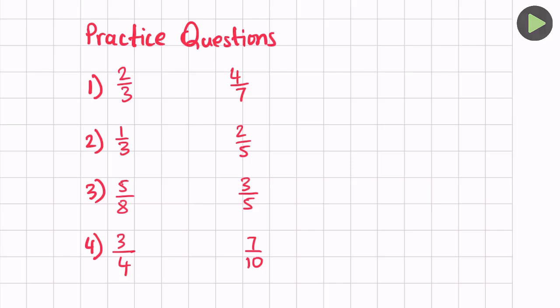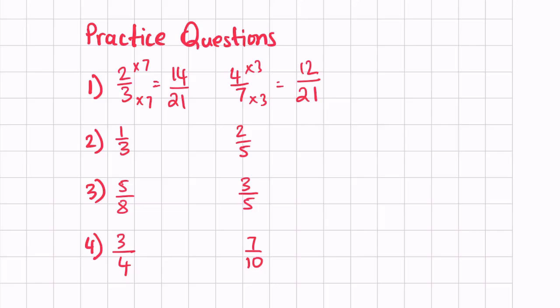Okay, I hope you had a good go at these questions. Let's have a look at the first question — we are comparing two thirds and four sevenths. We multiply two thirds by 7, giving us 14 over 21, and four sevenths by 3, giving us 12 over 21. We can see 14 over 21 is larger, so therefore two thirds is larger. It's a similar method to the earlier example.